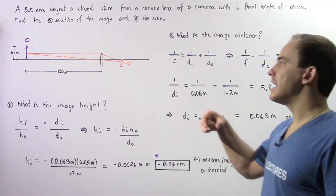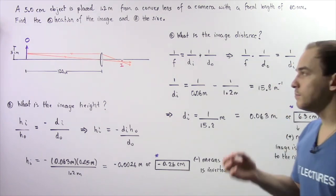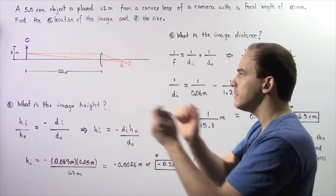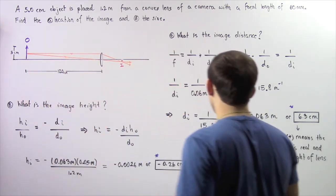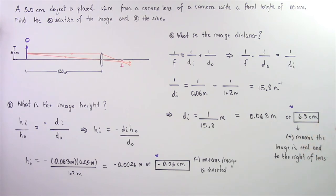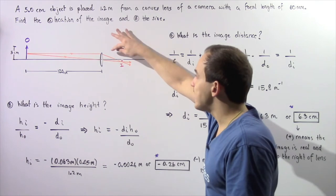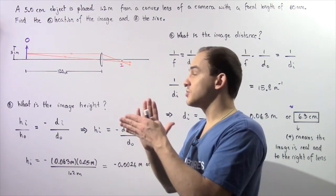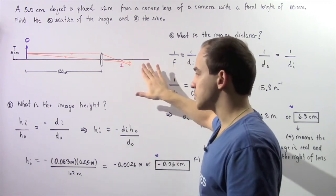That gives us positive 6.3 centimeters. The positive value in front of our image distance simply means that the image is found on the opposite side of where the light is coming from. So the image is found on the right side, where light is coming in from the left side. Positive means the image is real and on the right side of the lens. It's real because a real image is one in which the rays of light are actually passing through that image — so if we place a screen right behind our image, that image will appear on our screen.